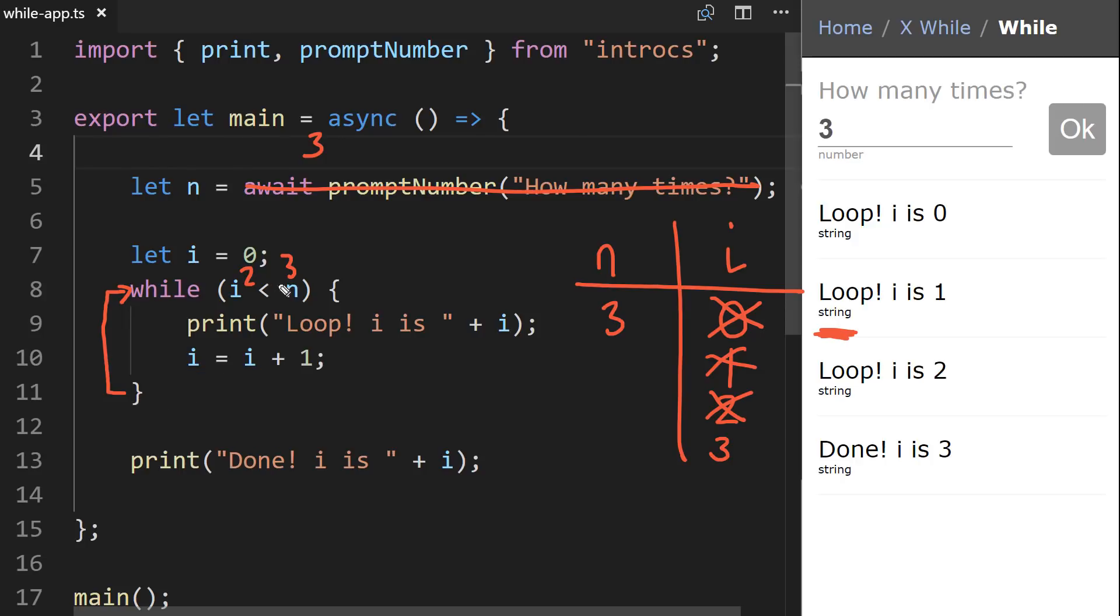We reach the end of our loop, and this time around we go back up and we evaluate is 3 less than 3. This is false, right? 3 is not less than 3. So we do not go into the repeat block. We continue on in our code, and we will print done i is and whatever i's current value is, i is 3. And that's what caused this line to print out.